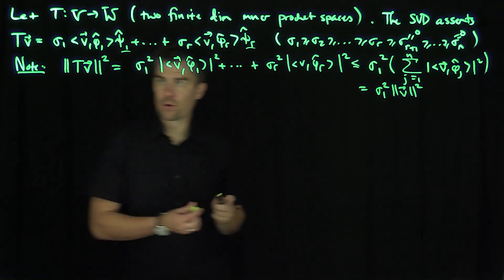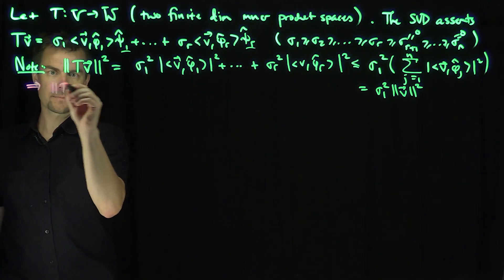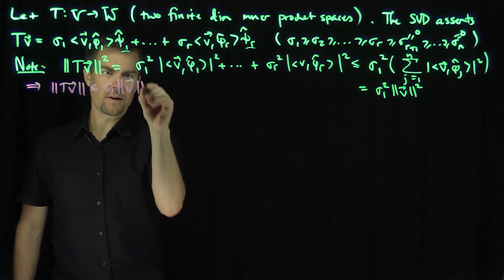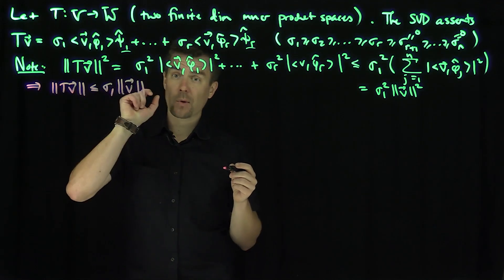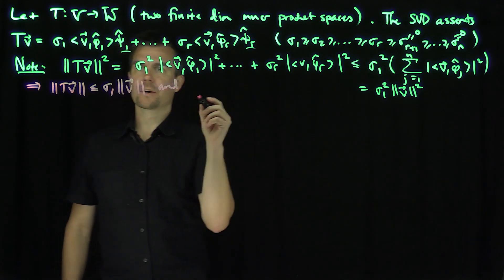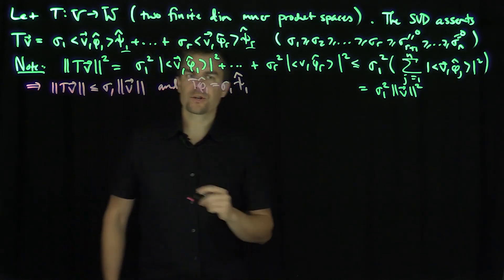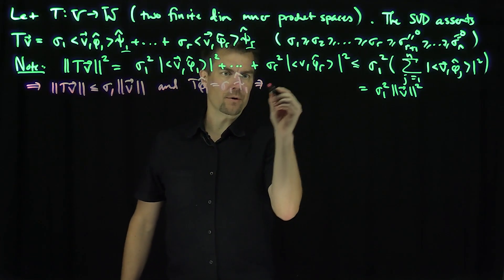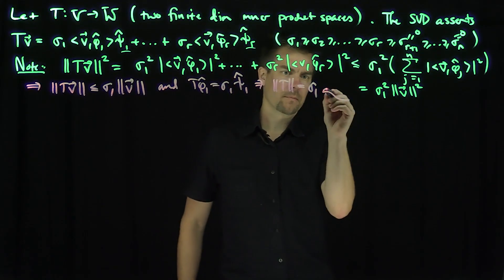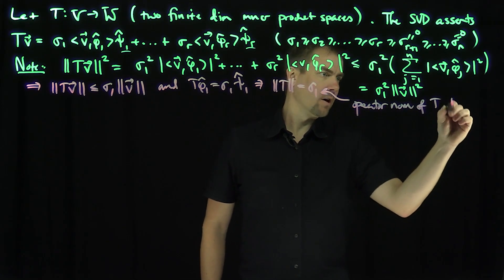We've just shown that the norm of T(V) squared is less than or equal to sigma_1 squared times the norm of V squared, so the norm of T(V) is less than or equal to sigma_1 times the norm of V for any V. We can attain this bound by plugging in phi_1-hat, since T(phi_1-hat) = sigma_1 * psi_1-hat. This tells us that the operator norm of T is exactly sigma_1, the largest singular value.